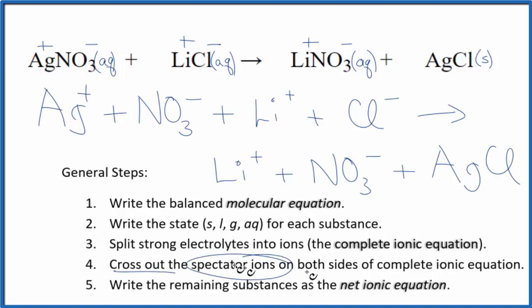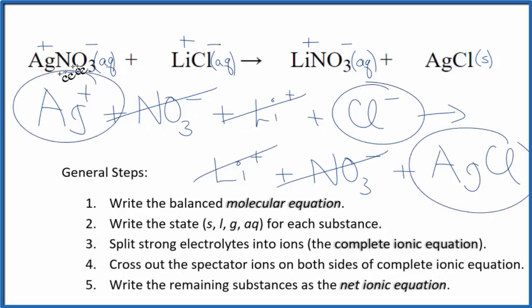Now we can cross out spectator ions—they're on both sides of the complete ionic equation. I find nitrate in the reactants and again in the products. It hasn't changed, so cross that out. Same with lithium—cross it out. What's left is the net ionic equation for AgNO3 plus LiCl.